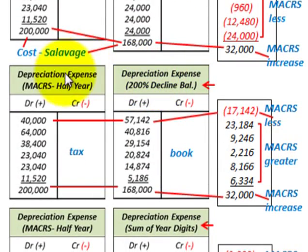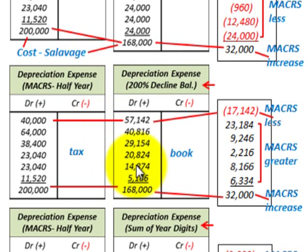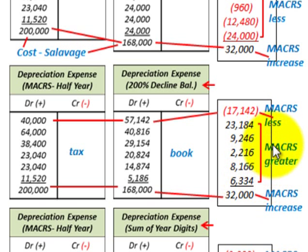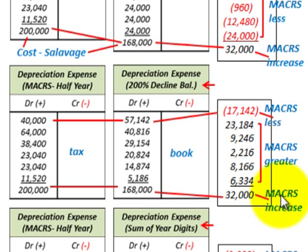Now let's look at the 200% declining balance versus our tax depreciation. For tax purposes in the first year, we actually have less depreciation by $17,142. But in the subsequent years, we have greater tax depreciation versus our declining balance book depreciation. Overall, we have $32,000 more depreciation for MACRS tax versus our book amount.